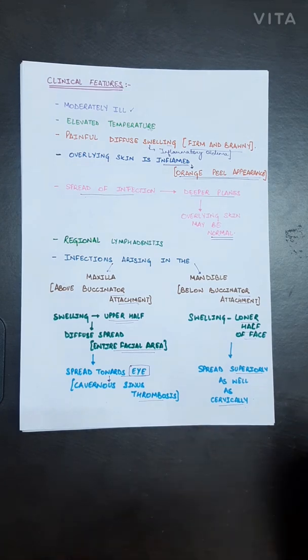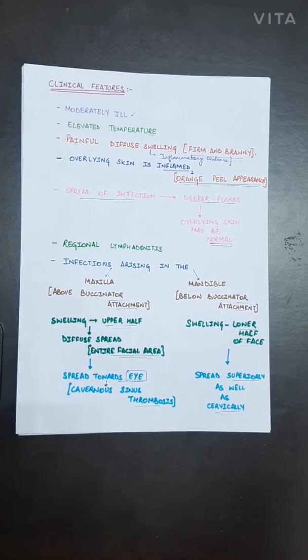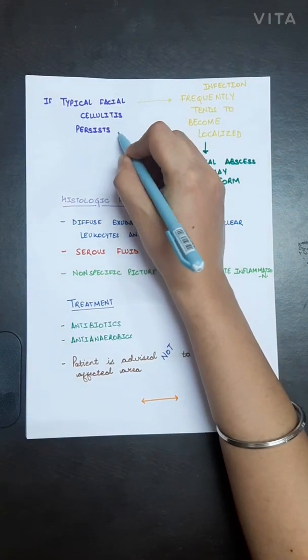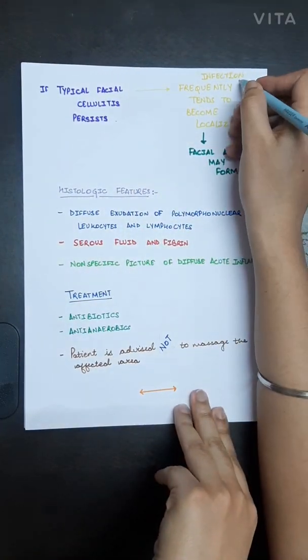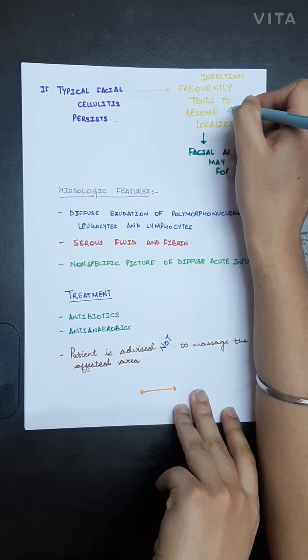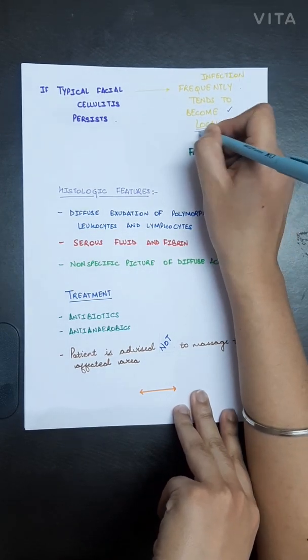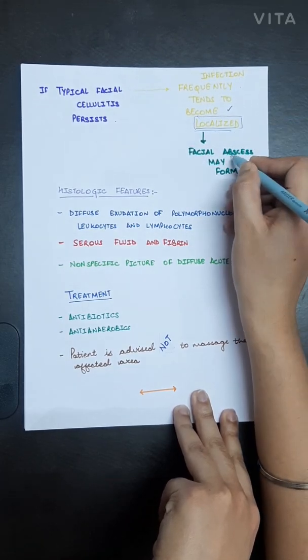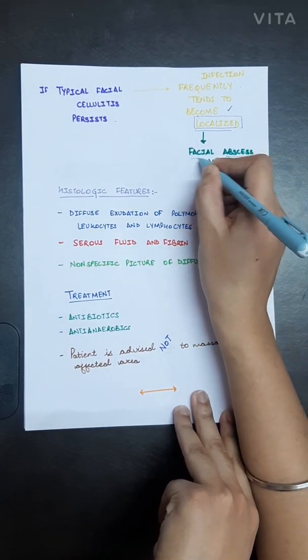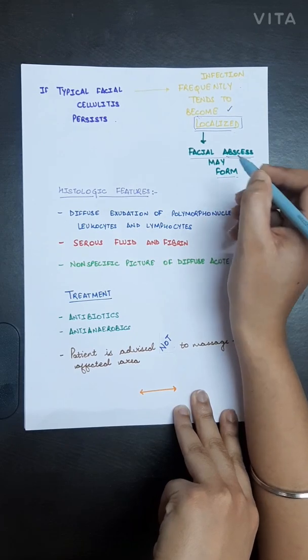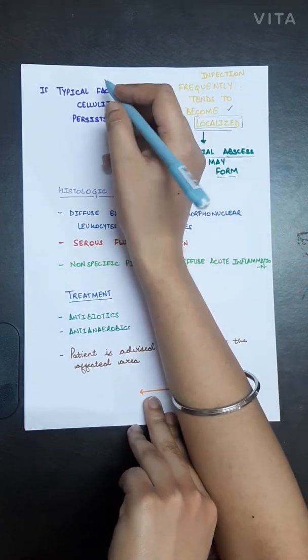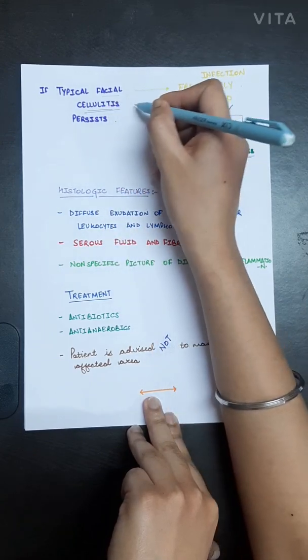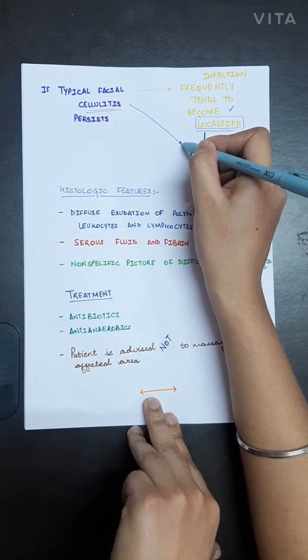If typical facial cellulitis persists, the infection frequently tends to become localized. If the infection becomes localized, it will turn into abscess - that is, facial abscess may form. So if facial cellulitis persists, it will transform into abscess.